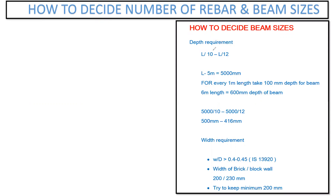So the rough formula you can always use is L by 10 — that is length divided by 10 — up to L by 12. This is the formula we have.